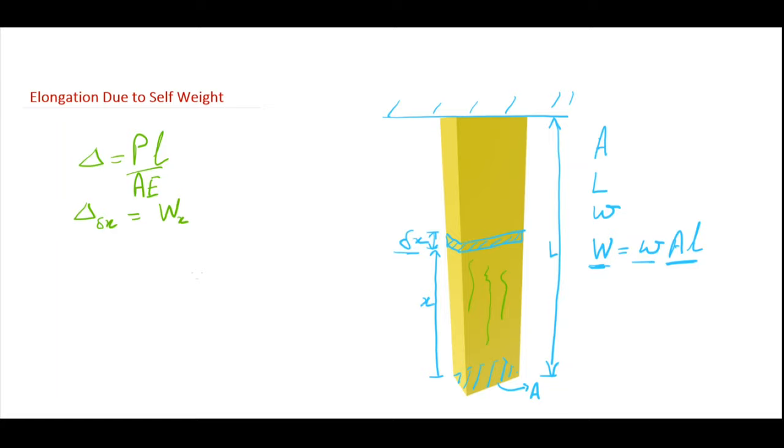Divided by cross section area, the length of the section is delta x by E. So this will be given by small w into cross section area.